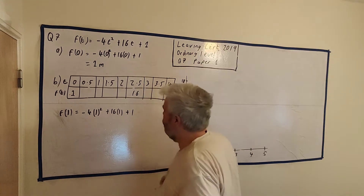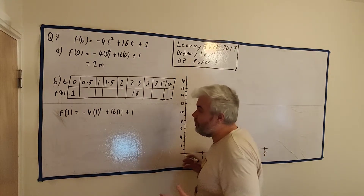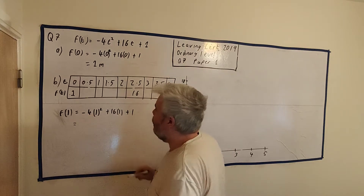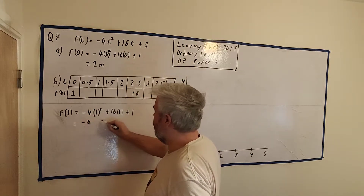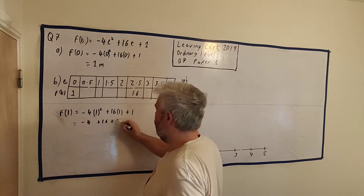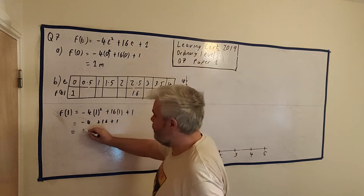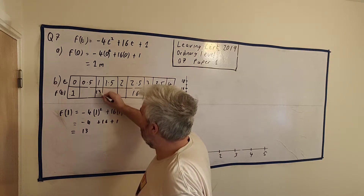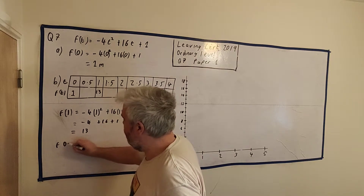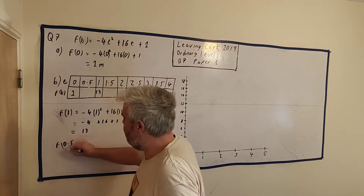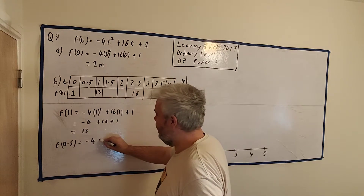That gives us sixteen times one plus one. Use a calculator — do not be afraid to use a calculator. We get 1 times 1 times minus 4 = minus 4, plus 16, plus 1. That's equal to 17 minus 4 = 13. So we can put 13 in here as an answer. Let me do one more — t = 0.5.